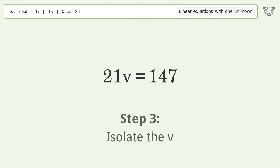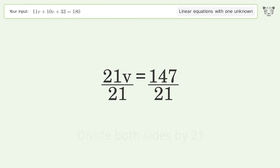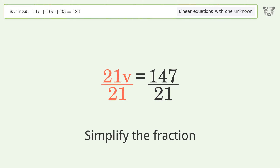Isolate the variable v by dividing both sides by 21, then simplify the fraction.